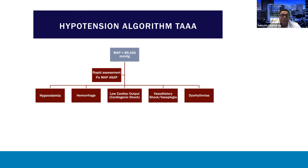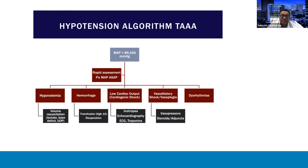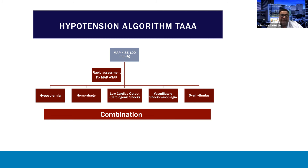Hypotension in the perioperative period is critically important — unlike a MAP target of 65, we don't want to tolerate a MAP less than 85. We rapidly assess and fix it as quickly as possible, keeping in mind a differential diagnosis. There could be hypovolemia, fixed with volume resuscitation; hemorrhage, fixed with transfusion; or ongoing bleeding requiring reoperation. There could be low cardiac output, treated with inotropes and echocardiography, or cardiac catheterization if indicated by laboratory values. There could be vasodilatory shock, treated with pressors and steroids; or dysrhythmias, treated aggressively with amiodarone and even cardioversion. It's important to remember that as the perioperative course progresses, multiple etiologies may come into the forefront.